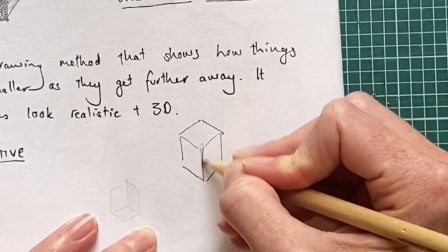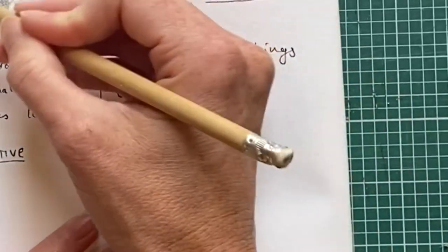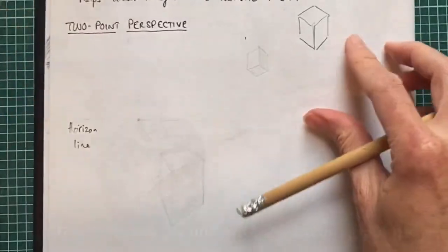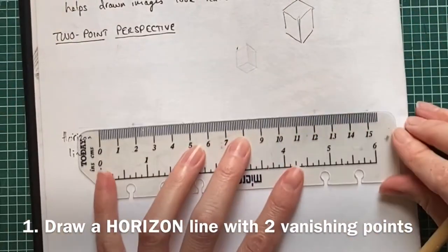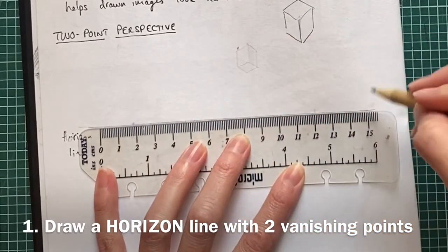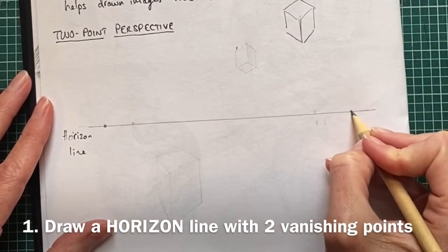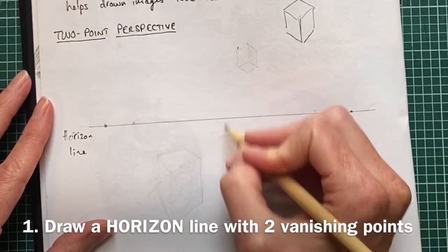You see, I'm viewing from the corner, not from the flat front. As before, we need our horizon line. We're going to have two vanishing points, so I'm going to draw a box right in the middle of this line first.